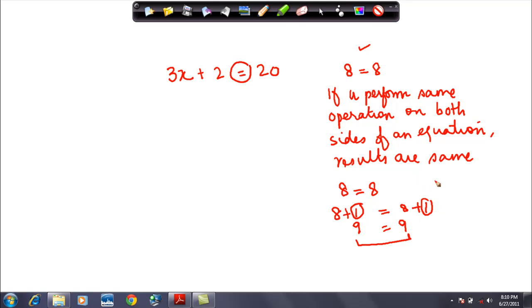Similarly, if I do this as eight minus one is equal to eight minus one, seven is equal to seven. Again, when I did a subtraction from both the sides, the value remains the same. Same thing happens with multiplication and division.